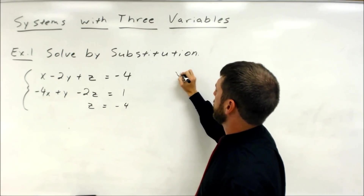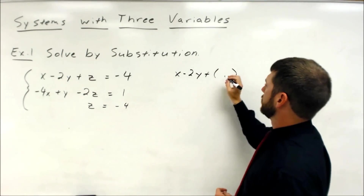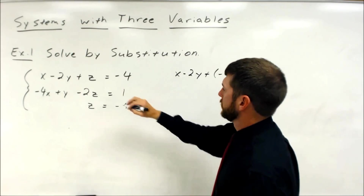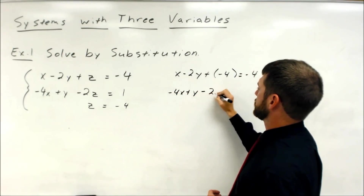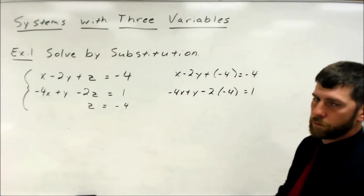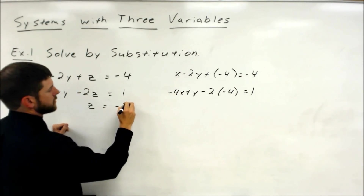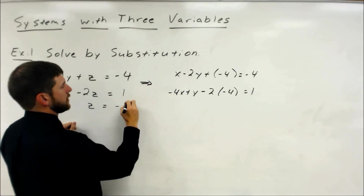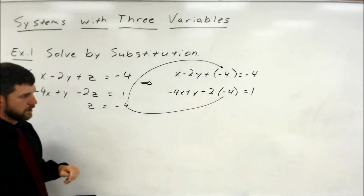So I'm going to take my x minus 2y plus z, and we just said z is negative four. Second equation: negative 4x plus y minus 2 times z, which is negative four, equals one. So we just took the first two equations and plugged in z, substituting it into both of them.